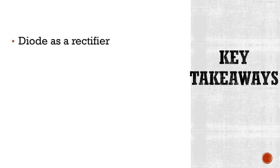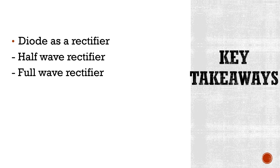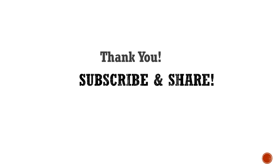That's all for today. Key takeaways: you studied how a diode acts as a rectifier — what is a half wave rectifier, a full wave rectifier, and a bridge wave rectifier — and you calculated the peak inverse voltage for all three types. Thank you for watching. Write your questions in the comment section, don't forget to subscribe to our channel and share it with your friends and family.